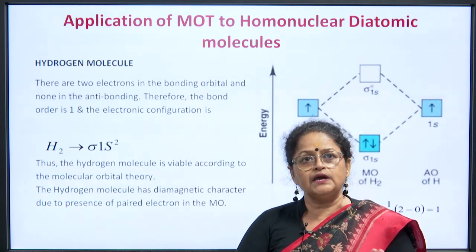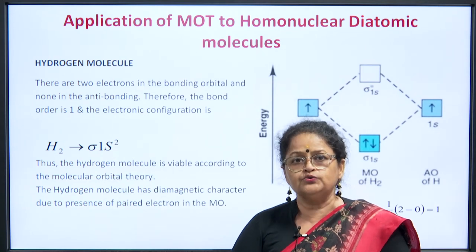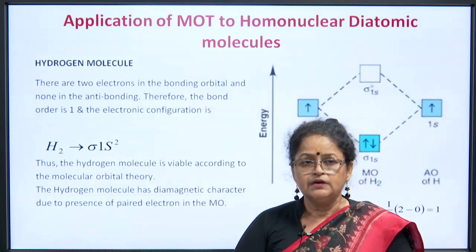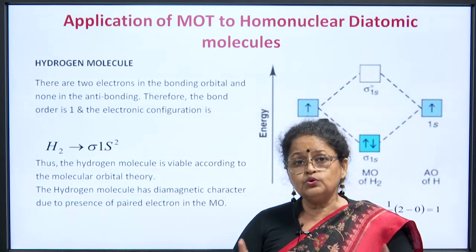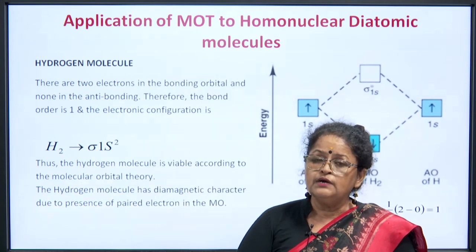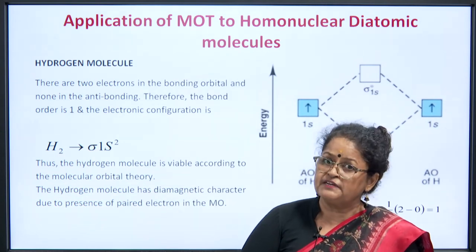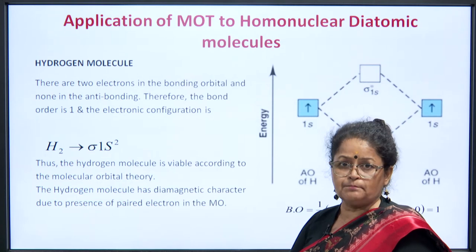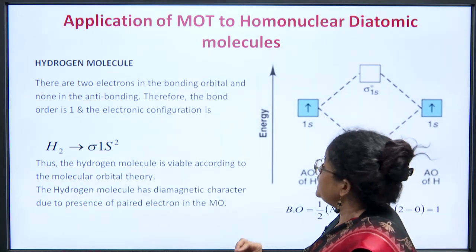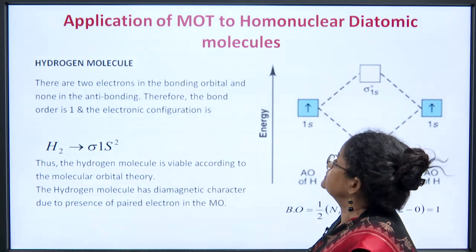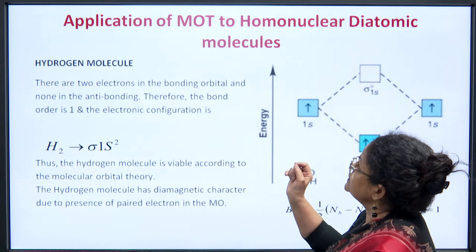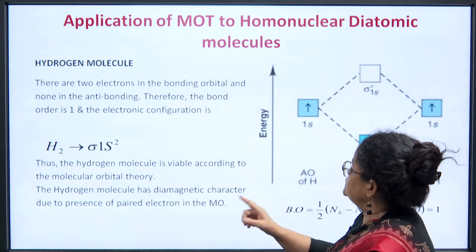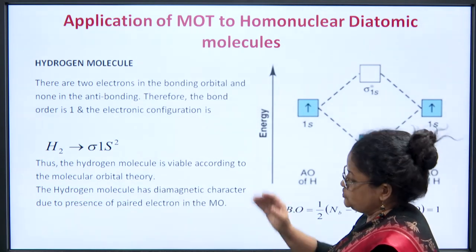Let us move on to the application of MOT to homonuclear diatomic molecules. In our periodic table, hydrogen is the very first element. We will see whether two hydrogen atoms combine together to form a molecule, and if they do, what is its magnetic character and bond order. In the hydrogen molecule, there are two electrons in the bonding orbital and none in the anti-bonding orbital. Therefore, in a hydrogen molecule the bond order is 1, as shown in the electronic configuration below.